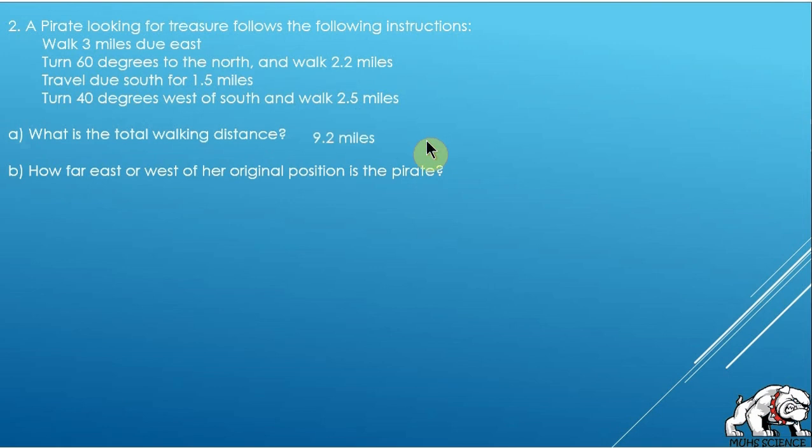Now the question, how far east or west of her original position is the pirate? Well, this time you're going to have to figure out the components in the x and y direction. So the first thing we do is of course start with a picture of what her legs of the journey are.